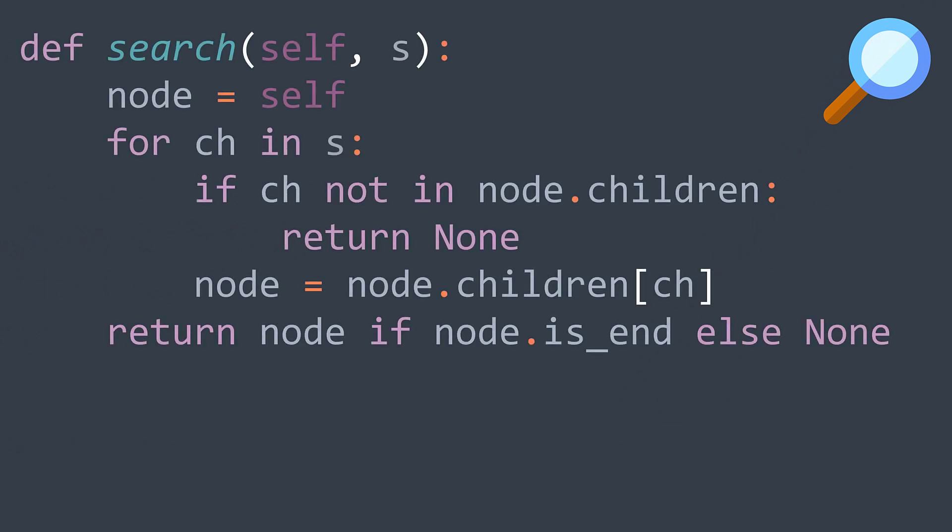Next operation: searching. We want to return the node where the string we're searching for ends. For searching, we use the same logic as for inserting — it's just that when we don't find the node in children, we don't create it; it means the string doesn't exist in the trie, so we return null. Otherwise, we set node to node.children[ch] and continue. After the loop, we return the actual node if isEnd is true, representing the node where the string ends. If it's not isEnd, we return null — even if we found all the characters, if the last node is not isEnd, the string doesn't exist in the trie.